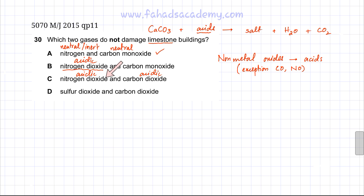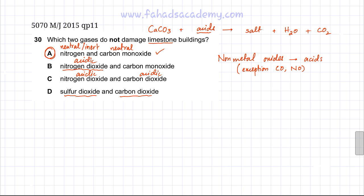Nitrogen dioxide produces nitric or nitrous acid when dissolved in water. The last option also contains two acidic gases — sulfur dioxide and carbon dioxide, both acidic. So the only correct option is option A: one gas is completely inert and unreactive, and the other is neutral, so neither reacts with calcium carbonate.